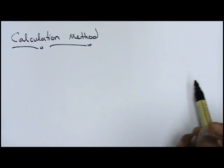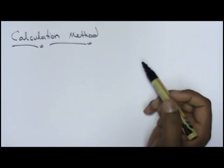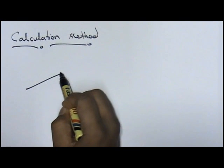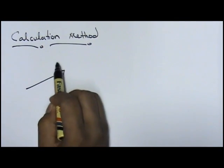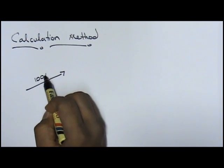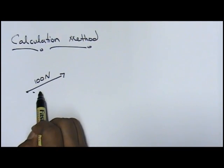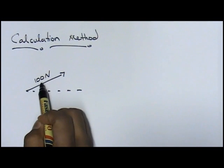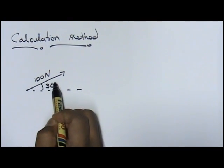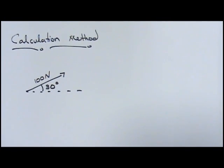As I told you earlier, forces can come in any direction. For an example, I have a force of 100 Newtons, and it makes an angle of 30 degrees with the horizontal.